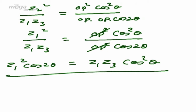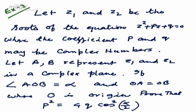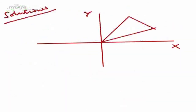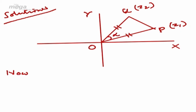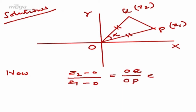Let us come to Example 3 based on rotation of complex numbers. Let Z1 and Z2 be the roots of Z² + PZ + Q = 0, where coefficients P and Q may be complex numbers, and A, B represent Z1 and Z2 in the complex plane. If angle AOB = alpha and OA = OB, where O is the origin, prove that P² = 4Q·cos²(α/2). In the Argand diagram, P is Z1 and Q is Z2, with OP = OQ and angle between them is alpha.